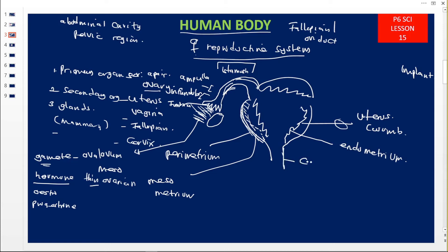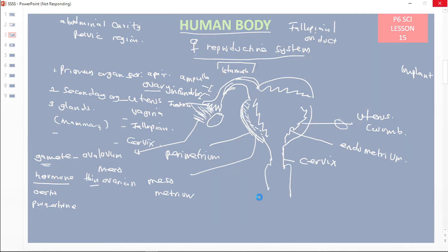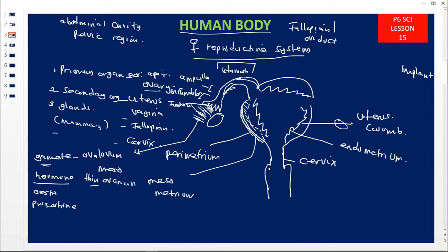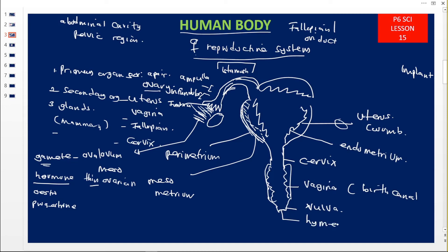Below the uterus is the cervix. The cervix leads into a muscular canal called the vagina — also called the birth canal. The vagina ends with an opening called the vaginal opening or the vulva. The vulva has a thin membrane that is only seen in virgins, called the hymen. This hymen is a characteristic of only virginal females.